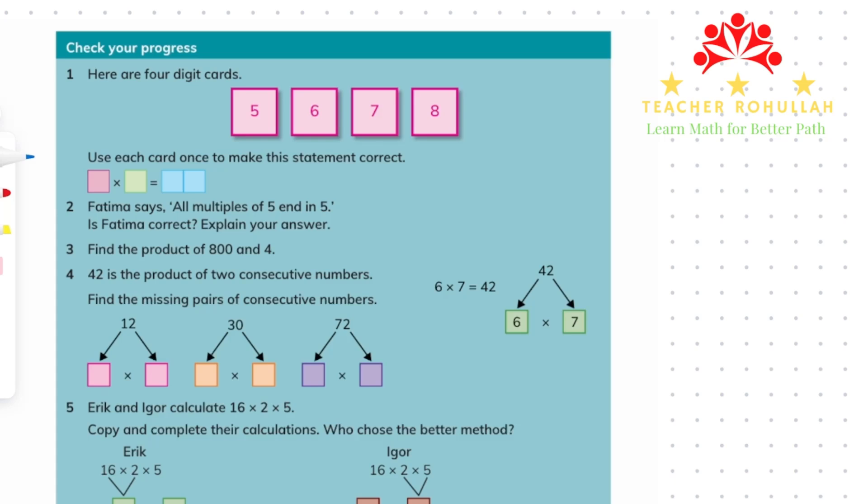The first question in this part says here are four digit cards. We have five, six, seven and eight. And again it says use each card once to make this statement correct. So here we have two factors and one product. We have to use two of these digit cards in the factors place and two of them in the product place.